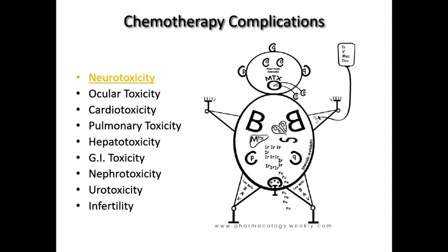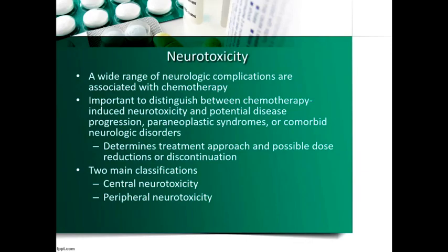Neurotoxicity — what's going on in the brain and then in the periphery. We have a wide range of neurologic complications that may result from chemotherapy. It's important to distinguish between chemo causing the neurotoxicity versus the cancer itself. Paraneoplastic syndrome means the cancer can secrete different hormones and chemicals leading to neuropathies. Patients with underlying diseases like diabetes may also be predisposed to peripheral neuropathy.